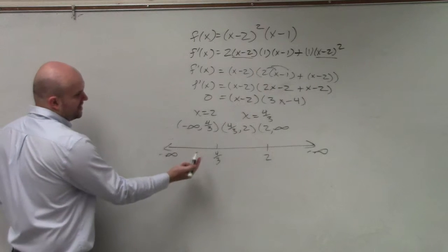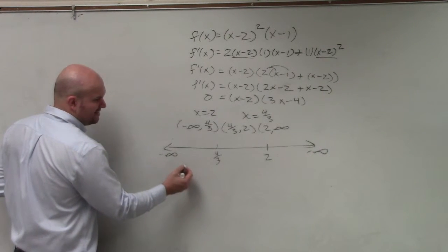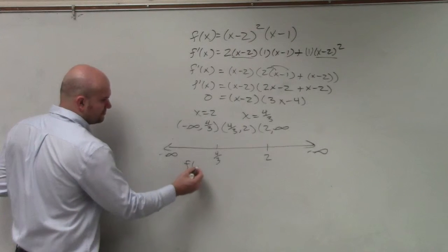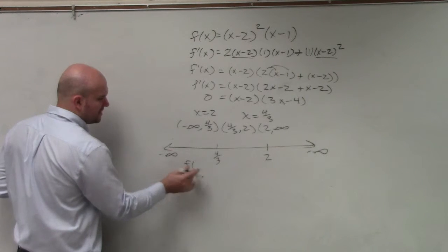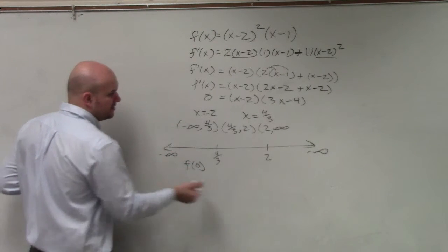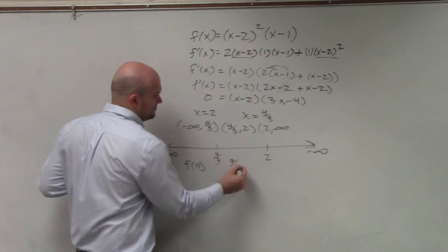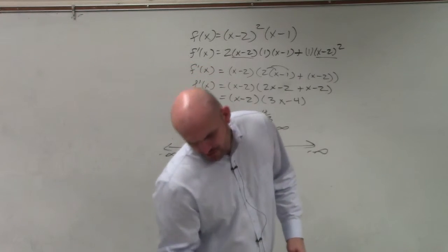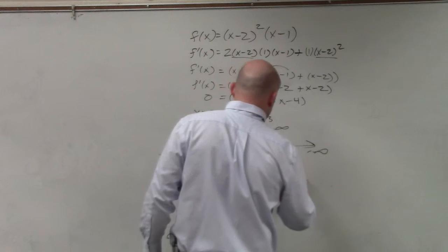So let's go ahead and check something less than 4/3. I think f(0) or 1 is good. Here, you could do f(3/2). What did I pick? Oh, I didn't show. And then you could do, like, f(3).